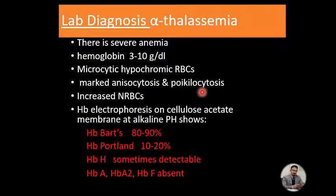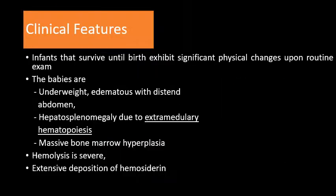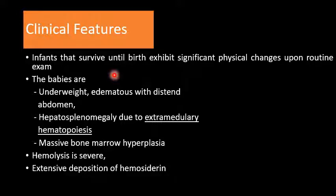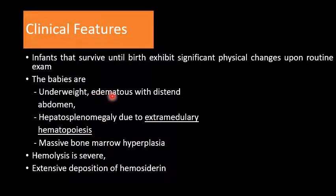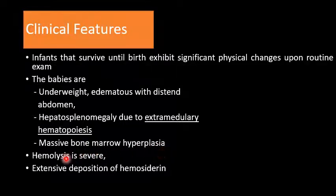Looking at the clinical features of this anemia, infants that survive until birth exhibit significant physical changes: they are underweight, edematous with a distended abdomen, and have hepatosplenomegaly due to extramedullary hematopoiesis. Massive bone marrow hyperplasia, especially erythroid hyperplasia, is present. Hemolysis is severe and extensive hemoglobin deposition is also found.